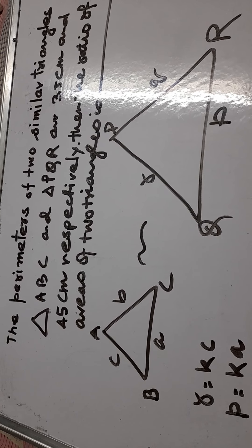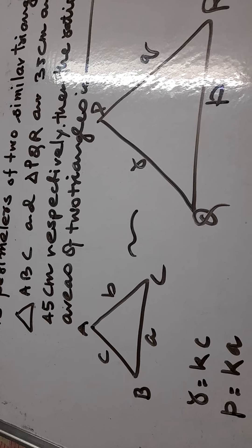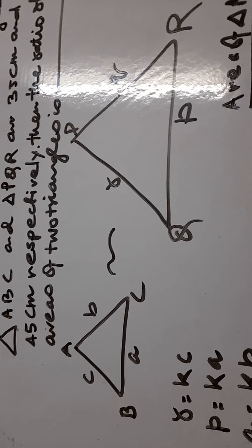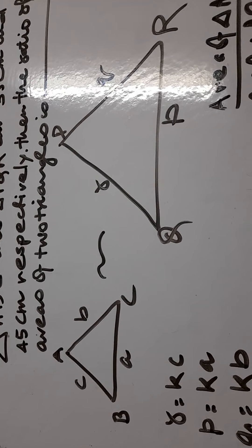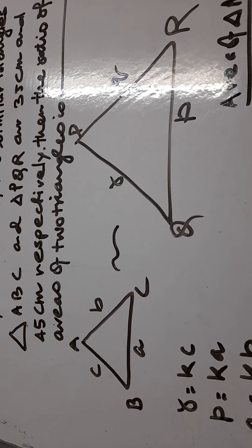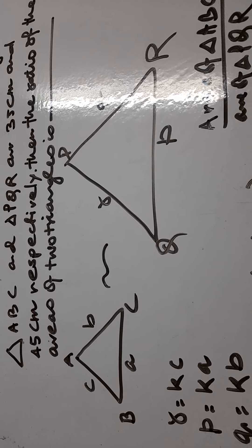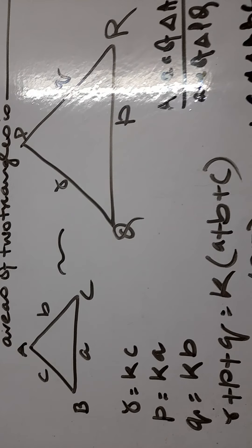The sides opposite to a is small a, opposite to b is small b and opposite to c is small c. Similarly, in the case of triangle PQR, as they are similar, let R equals KC and P equals KA and Q equals KB.